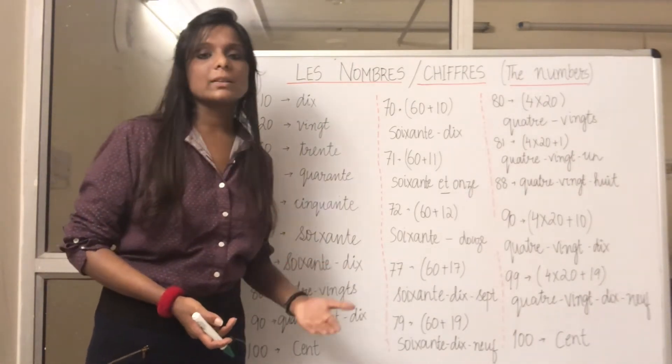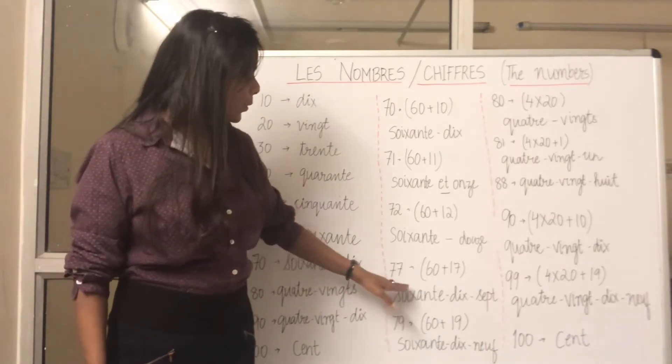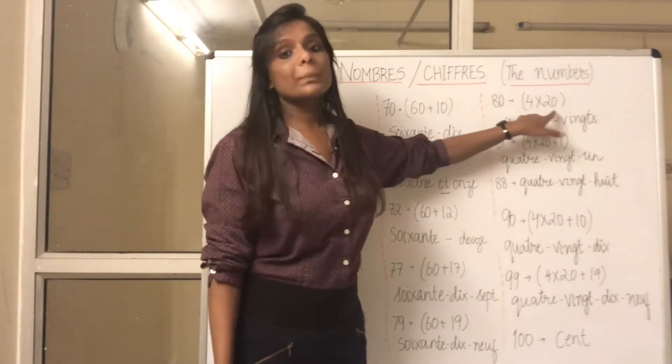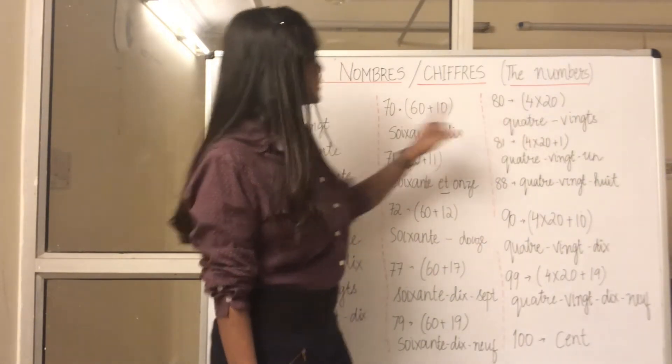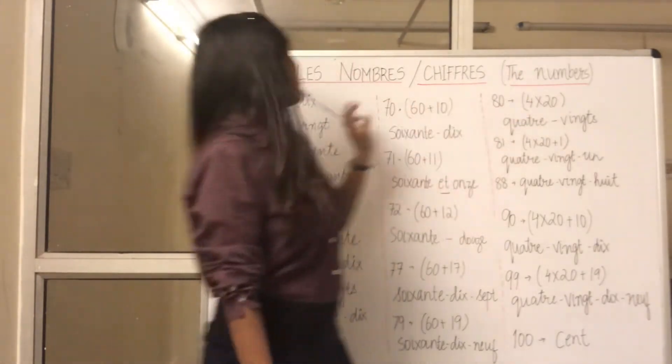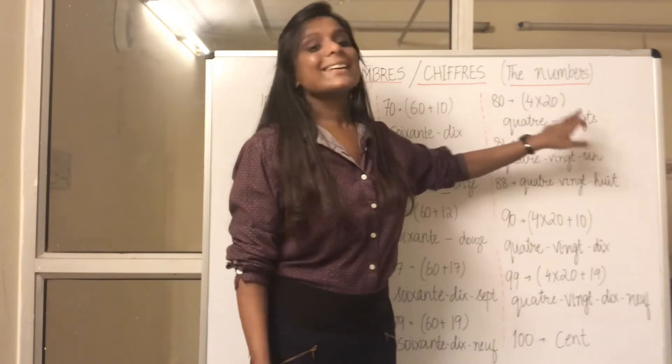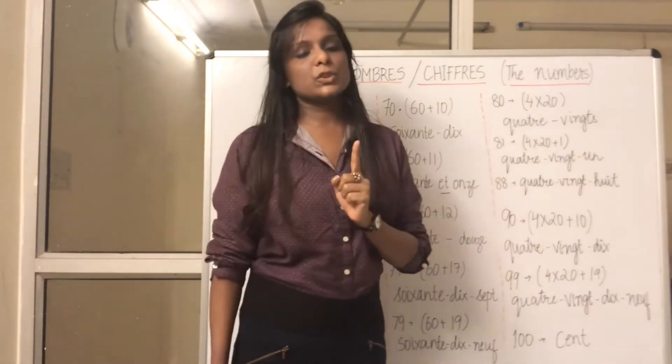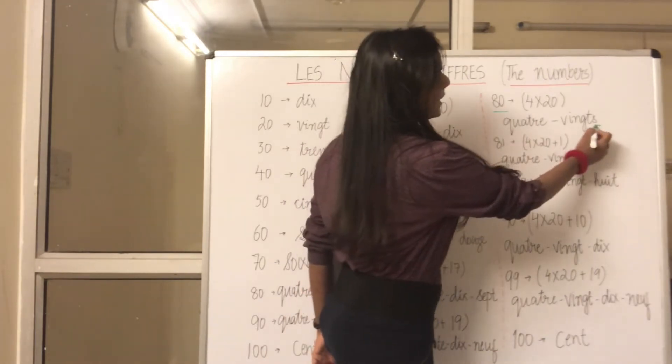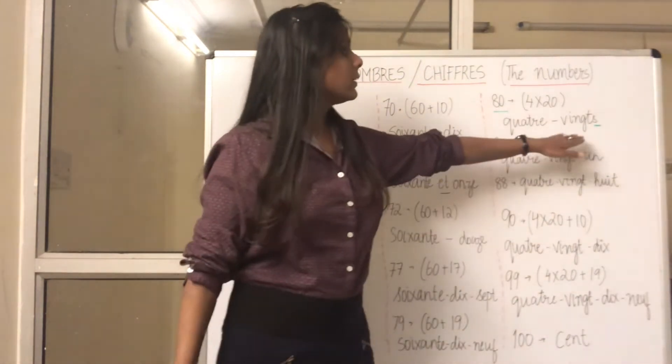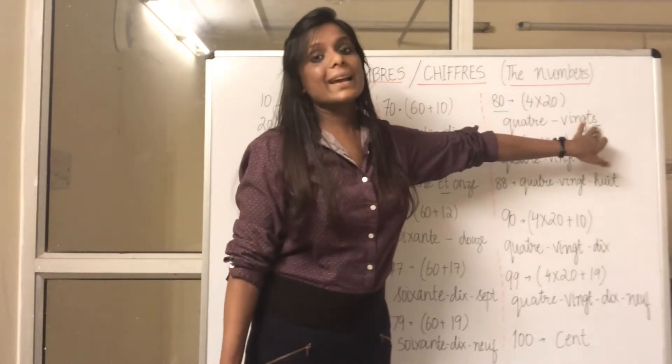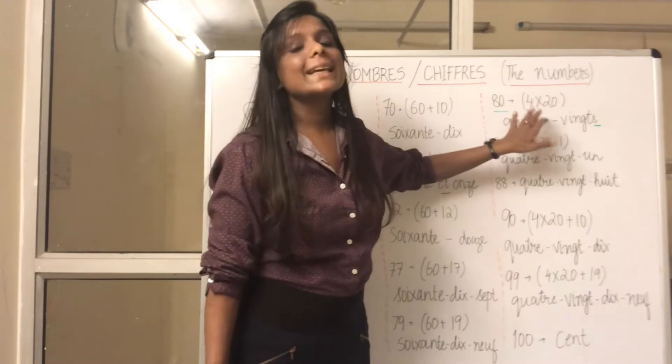Now, quatre-vingt, 80. So how do you write 80? 4 multiplied by 20. So 4, what is 4? 4 is quatre and what is 20? It is vingt. So quatre-vingt. So guys, there is one thing which is important to note that in 80 only, we add an 's'. Quatre-vingts. So when this vingt is written in 80, it is written with an 's', always, only in 80.